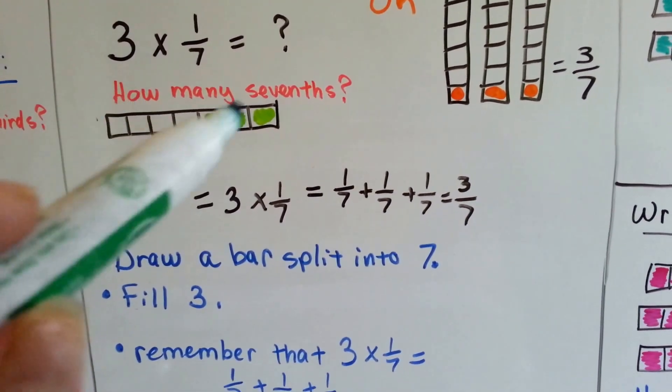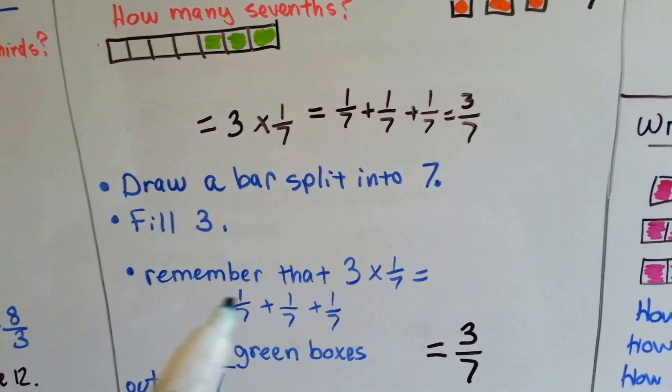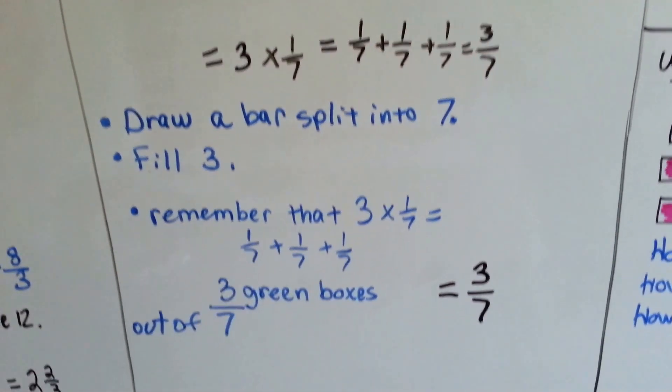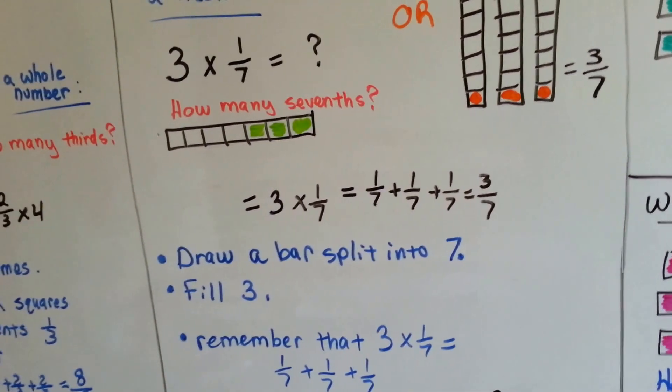So we drew the bar, we split into seven, we filled in three. Remember that we could count one-seventh three times. Three green boxes out of the seven is three-sevenths.